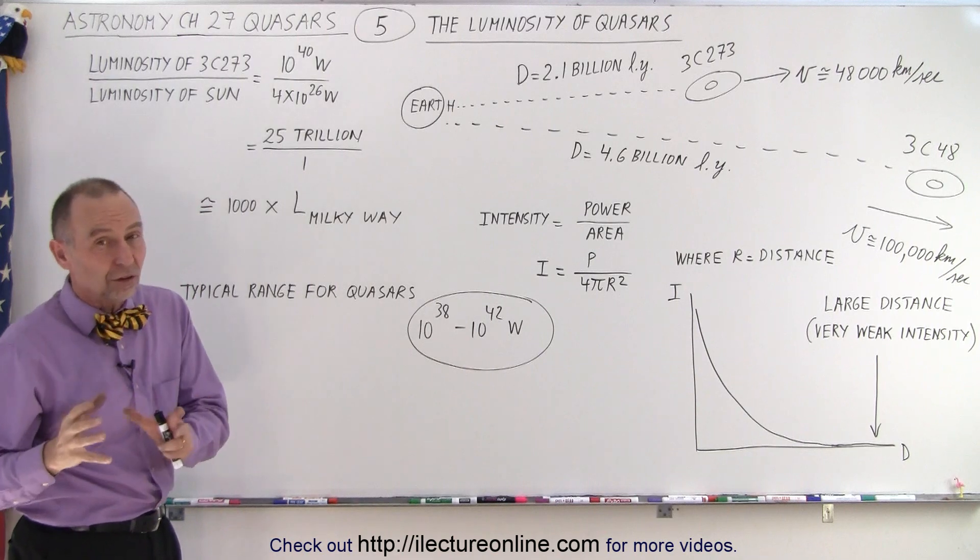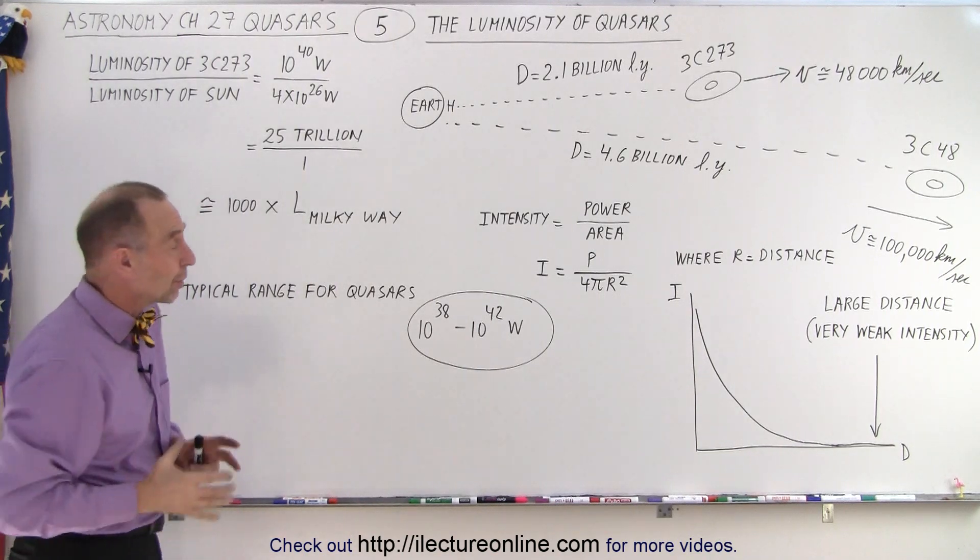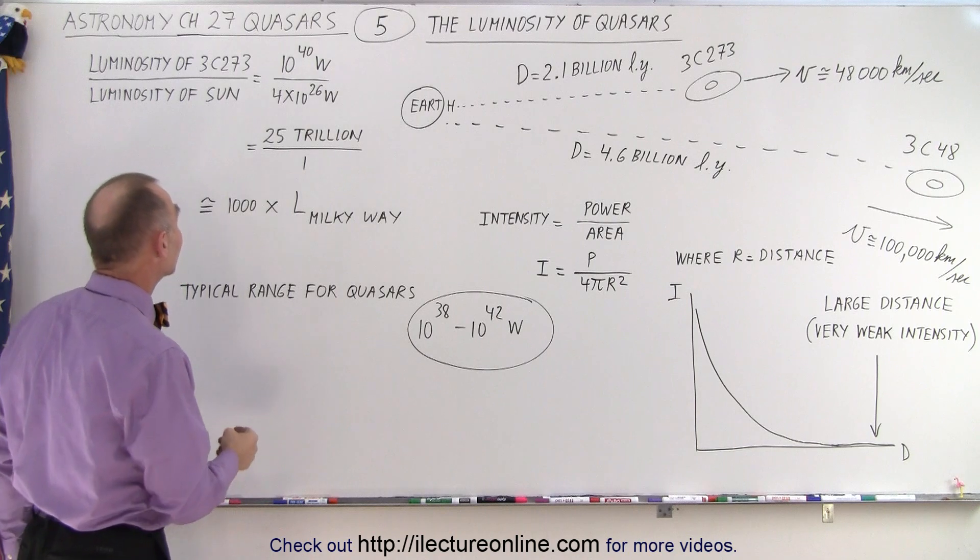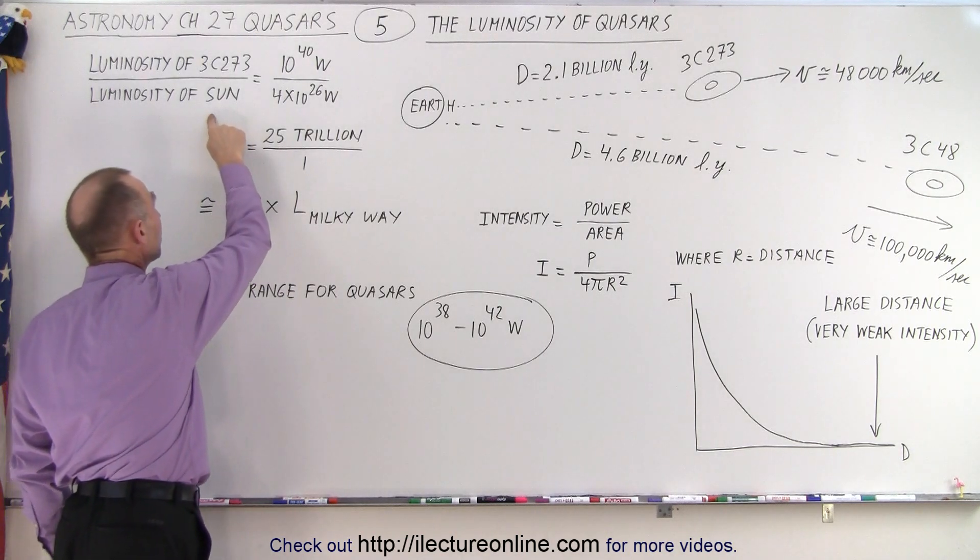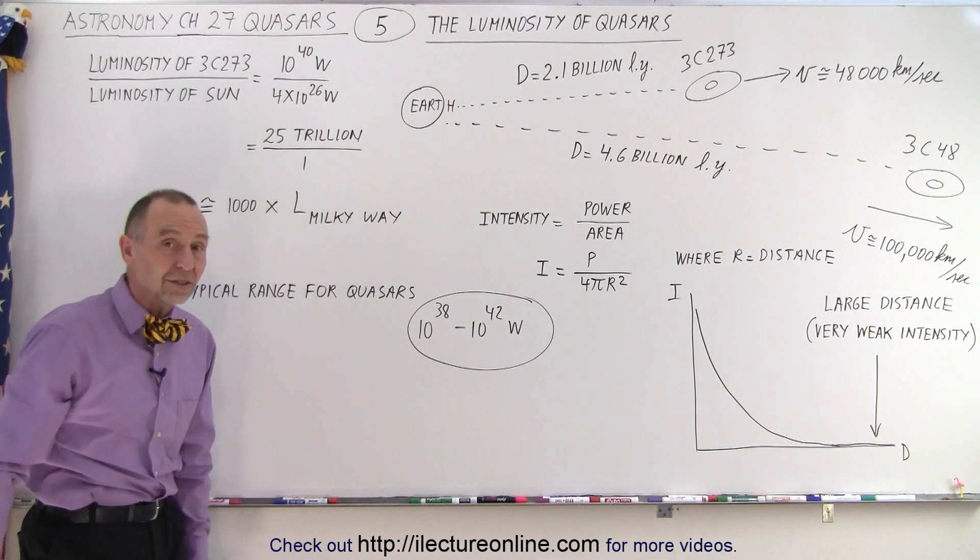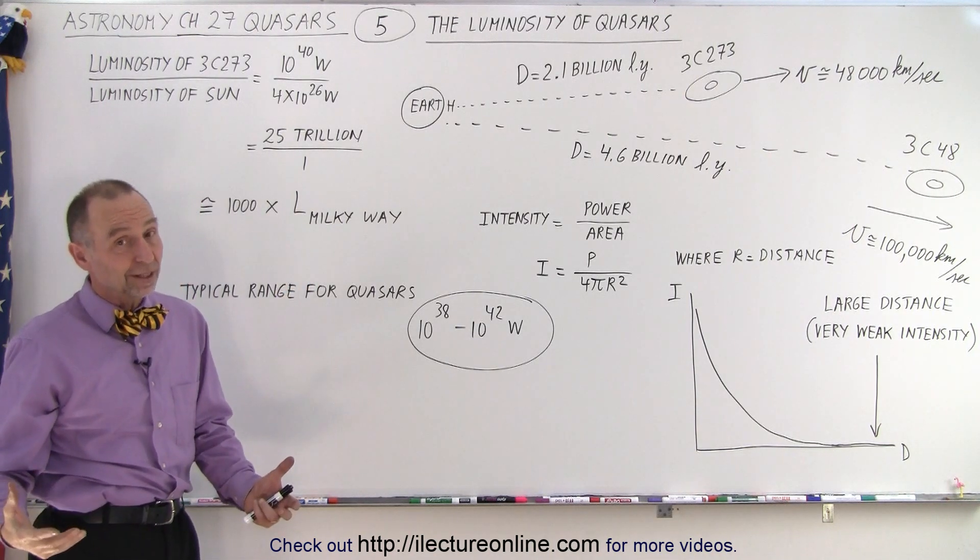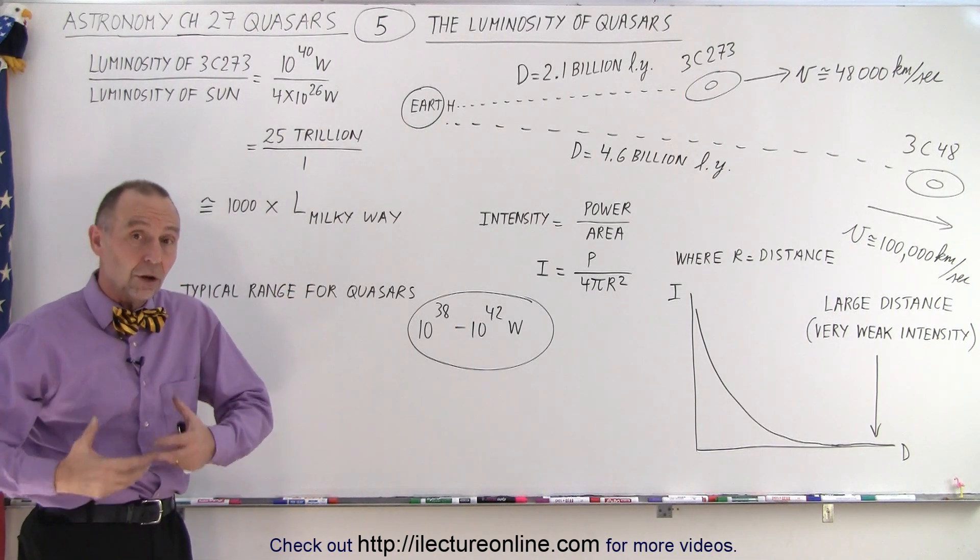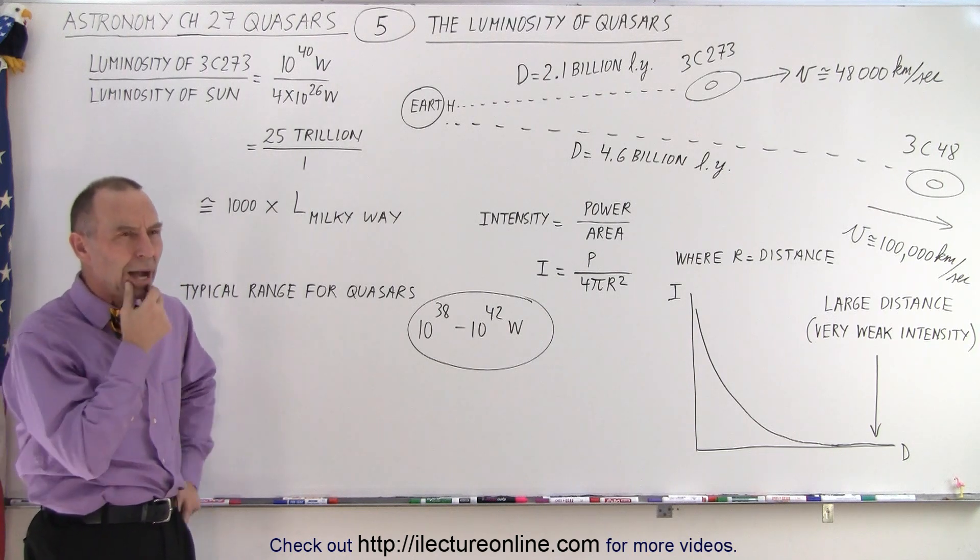Now the sun is a bit bigger than the average star in the Milky Way galaxy, so when we converted that to the Milky Way galaxy, that object was putting out as much energy as a thousand Milky Way galaxies. And our Milky Way galaxy is not a small galaxy, it's a large galaxy.